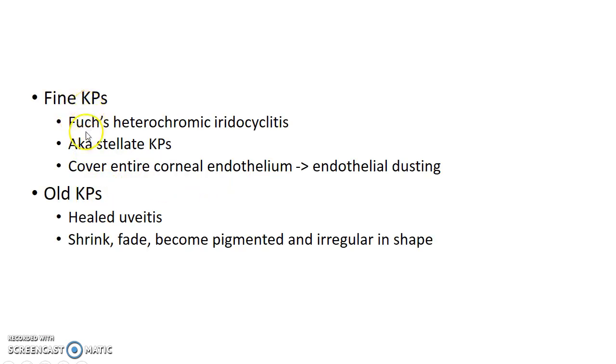Fine keratic precipitates are seen in Fuchs heterochromic iridocyclitis. They are also known as stellate keratic precipitates. They cover the entire corneal endothelium and they form corneal dusting.